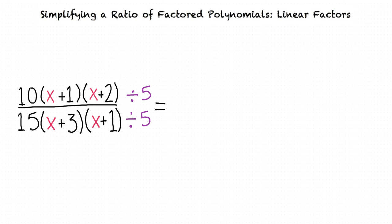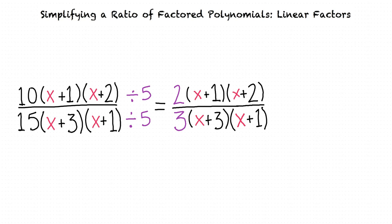And the expression is simplified to 2 times x plus 1 times x plus 2 all divided by 3 times x plus 3 times x plus 1. Now, let's look for any polynomial factors that appear in both the numerator and the denominator.